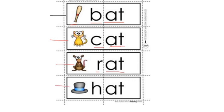And this one? H, at, hat. Bat, cat, rat, hat. Did you hear the at sound at the end of each word? Well done.